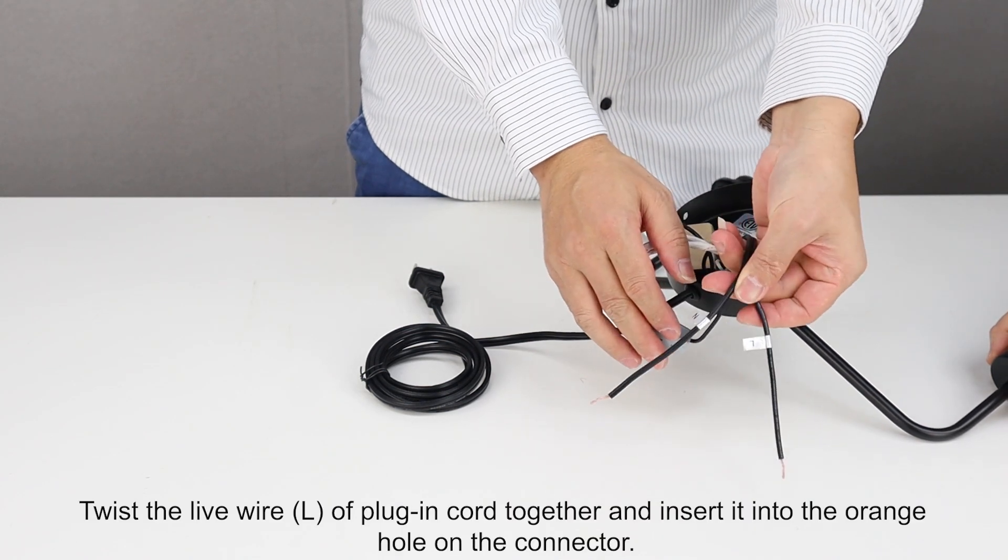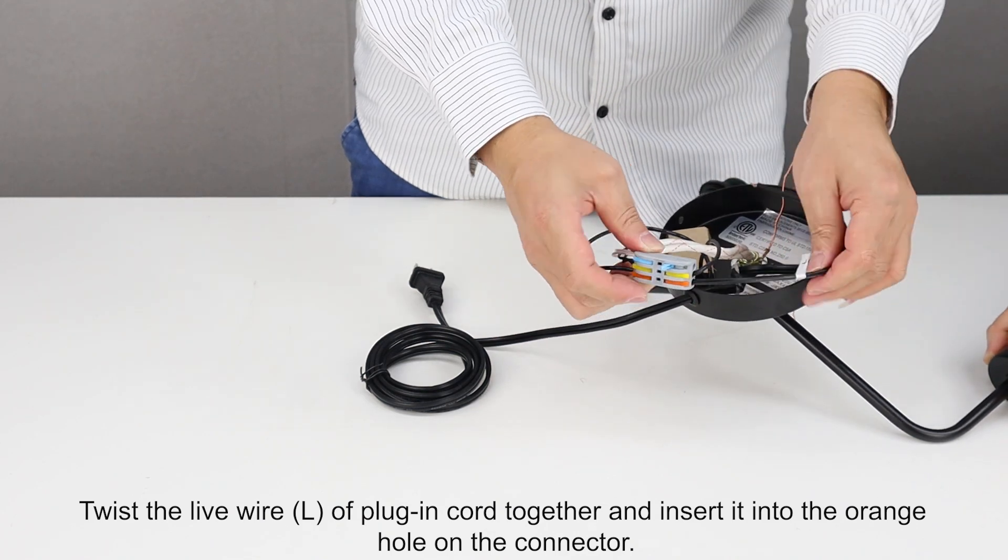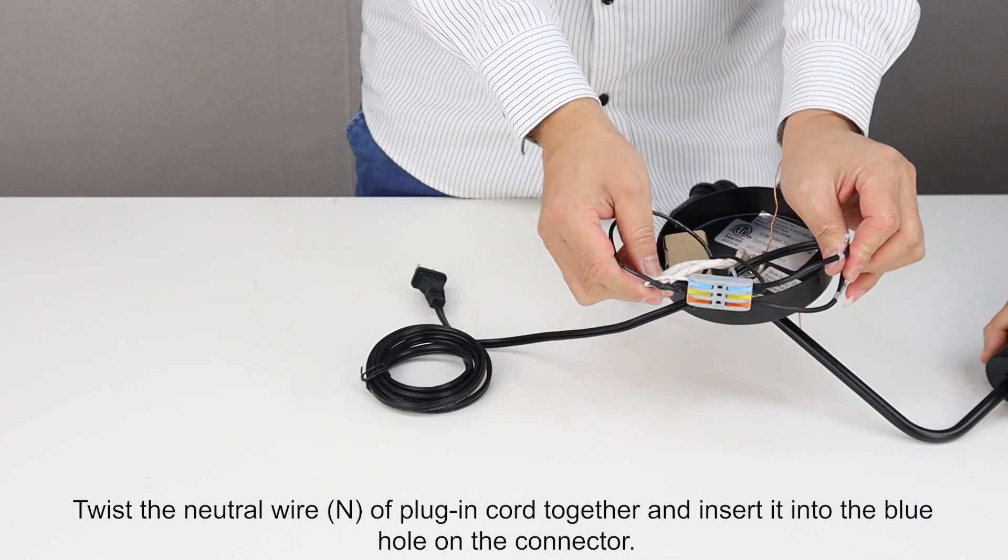Twist the live wire, L, of plug-in cord together and insert into the orange hole on the connector. Twist the neutral wire, N, of plug-in cord together and insert into the blue hole on the connector.